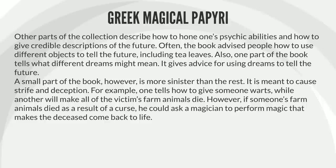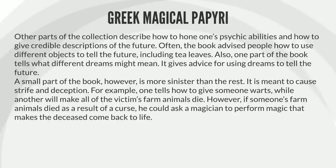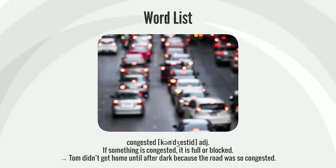Also, one part of the book tells what different dreams might mean. It gives advice for using dreams to tell the future. A small part of the book, however, is more sinister than the rest. It is meant to cause strife and deception. For example, one tells how to give someone warts, while another will make all of the victim's farm animals die. However, if someone's farm animals died as a result of a curse, he could ask a magician to perform magic that makes the deceased come back to life.